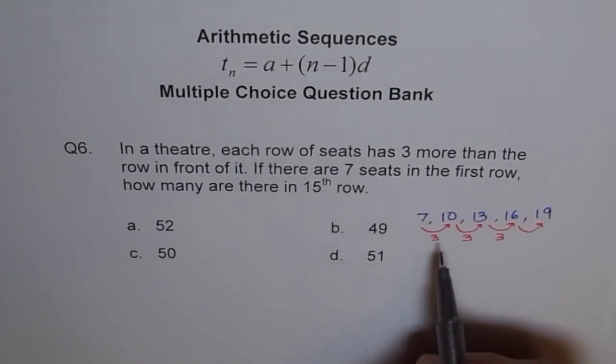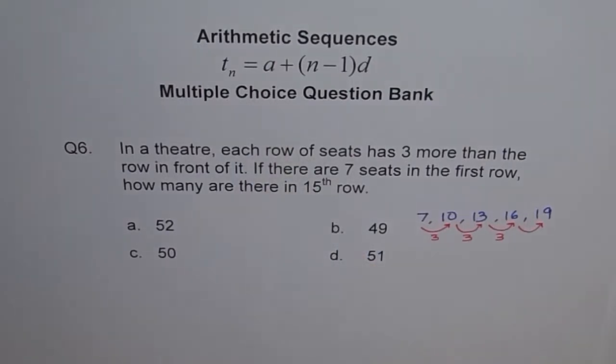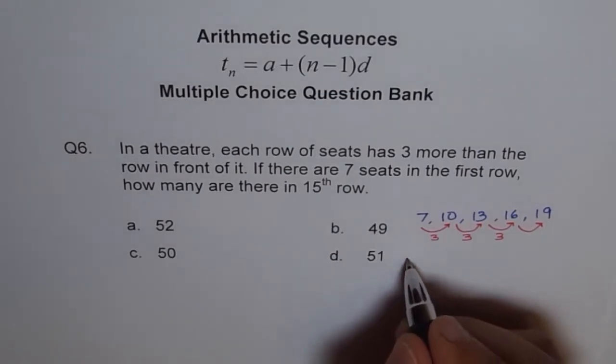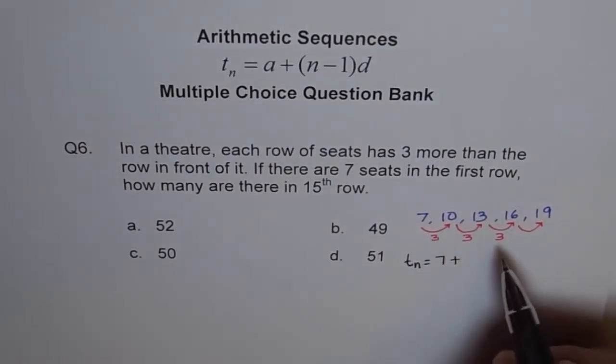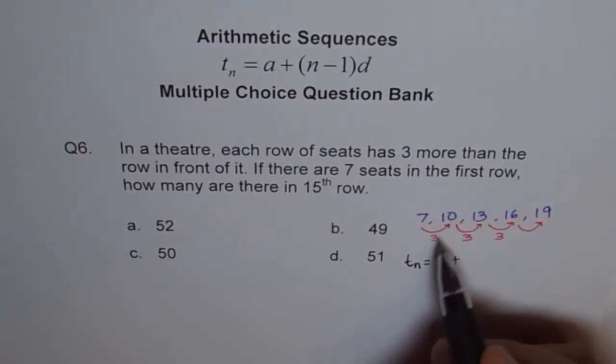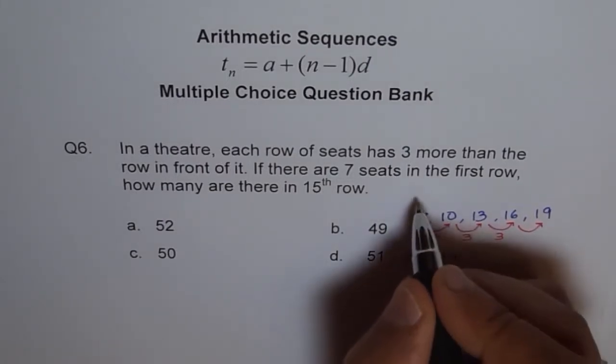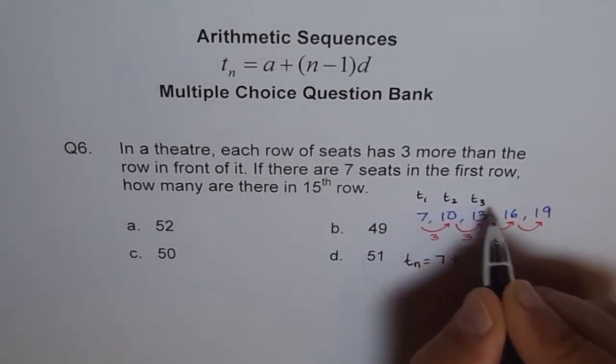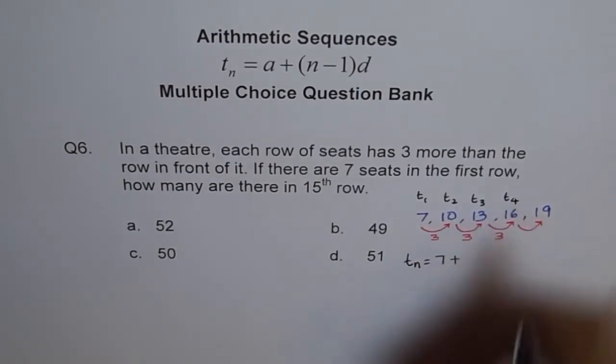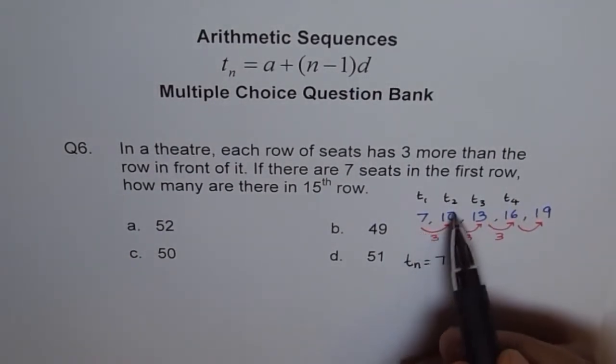A is our first term. So we will write the general formula now. We say, Tn equals to the first term, 7, plus general term, let's say second term. How many times did we add 3? In the second term, we added 1 time. Let me write this as T1, T2, T3, T4.